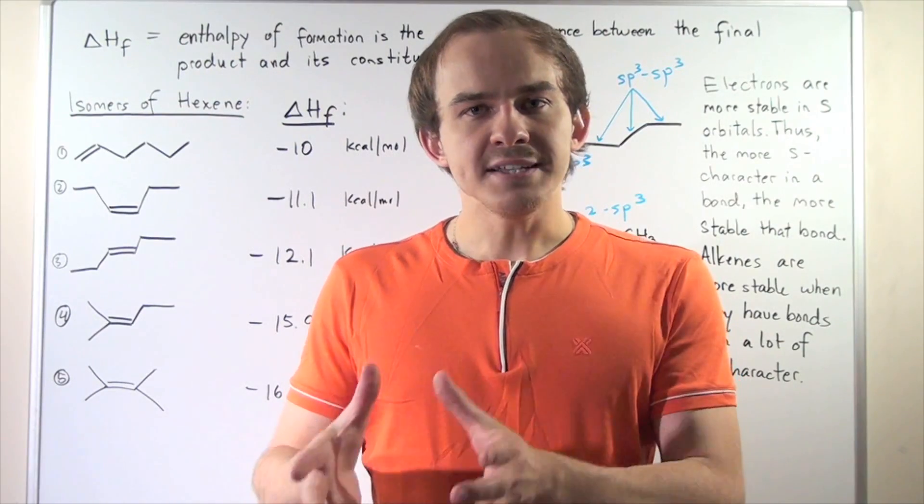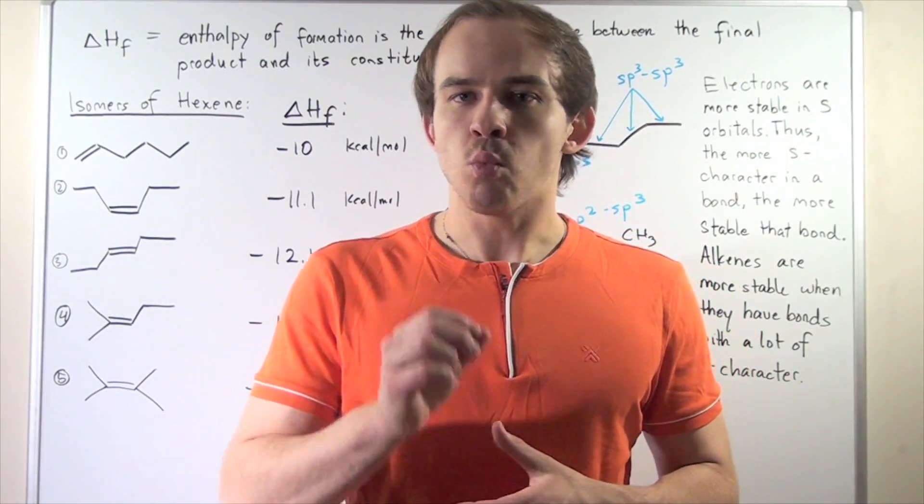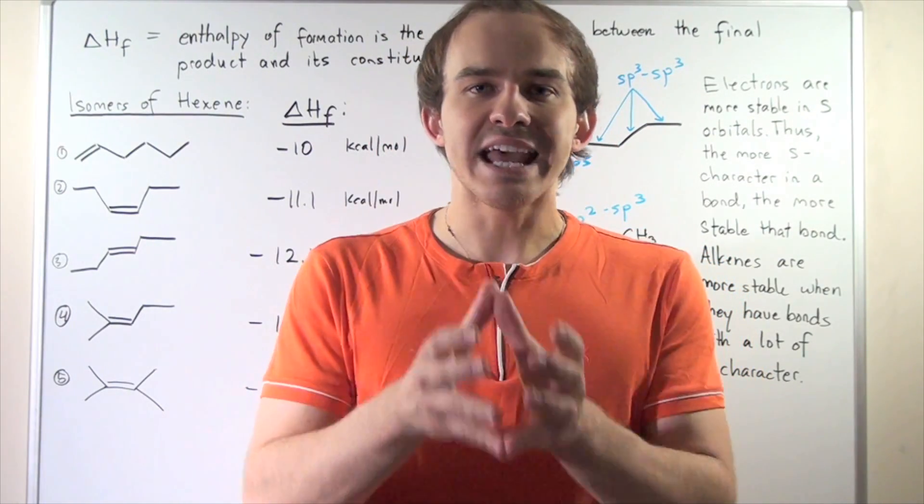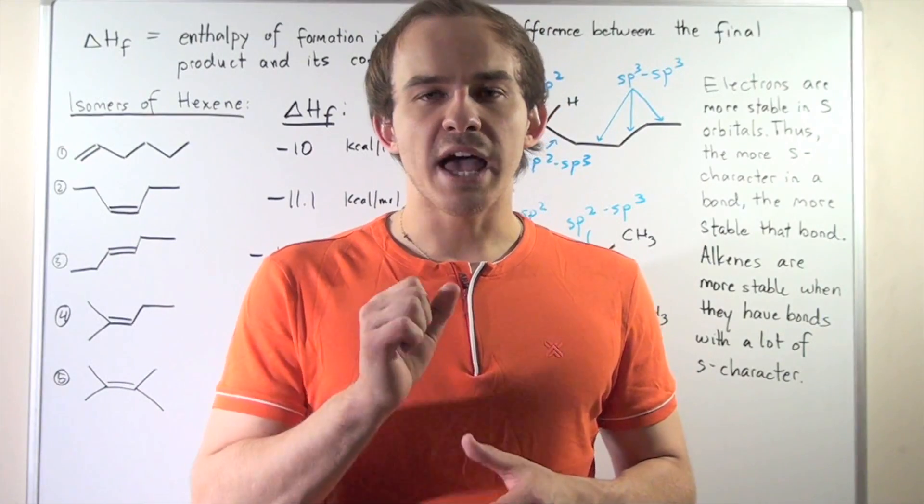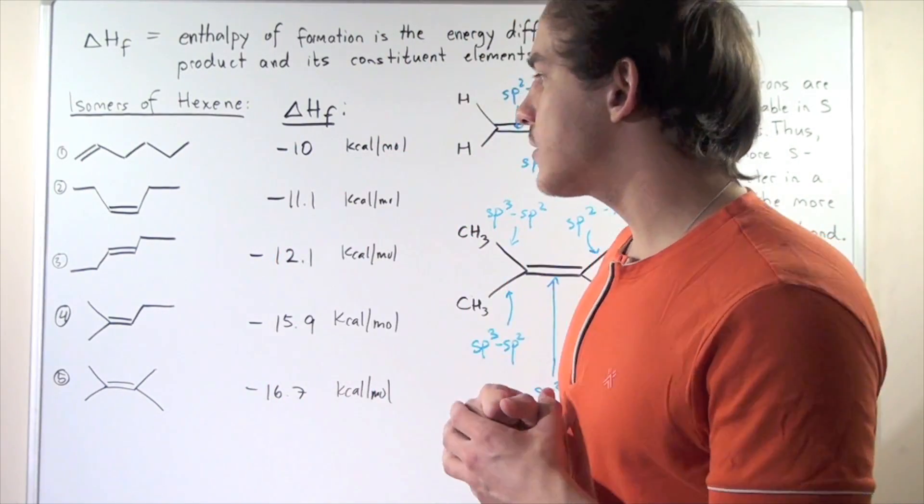In other words, some isomers are more stable than other isomers. So in general, why is that? Why is it that some isomers of alkenes are more stable than other isomers of that same alkene? So we're going to address that question in this lecture.